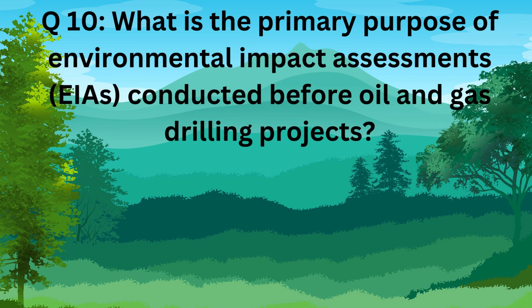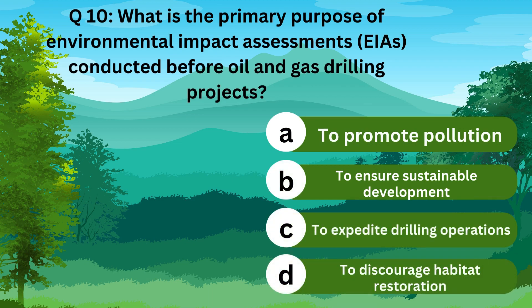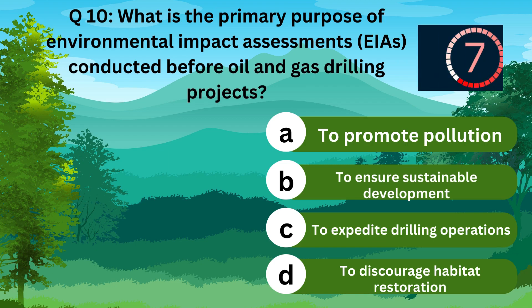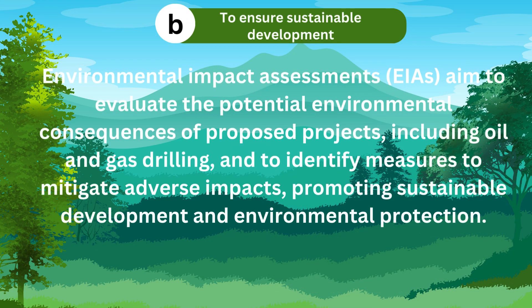Question 10. What is the primary purpose of environmental impact assessments (EIAs) conducted before oil and gas drilling projects? A. To promote pollution. B. To ensure sustainable development. C. To expedite drilling operations. Or D. To discourage habitat restoration. The correct answer is B. To ensure sustainable development.